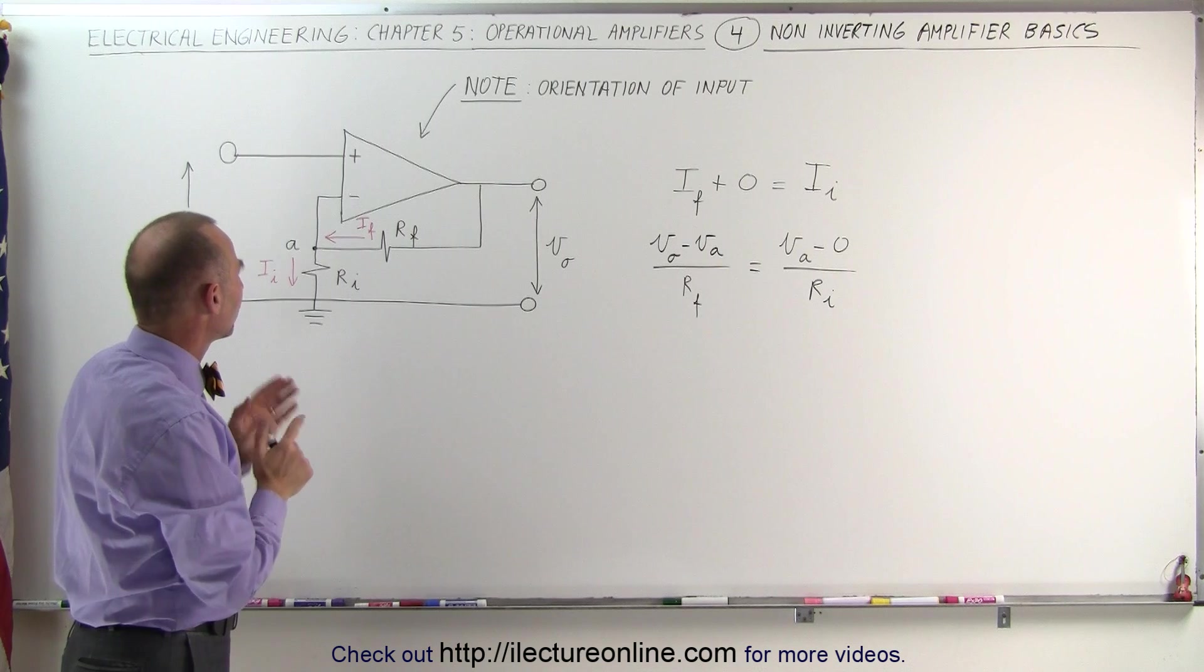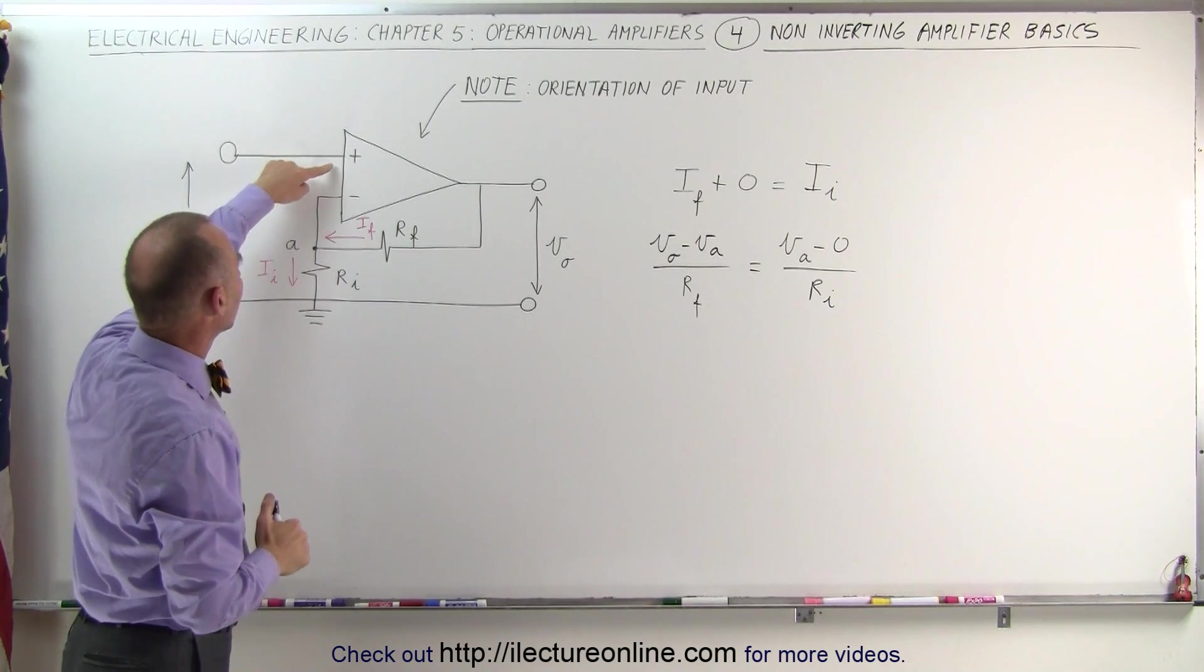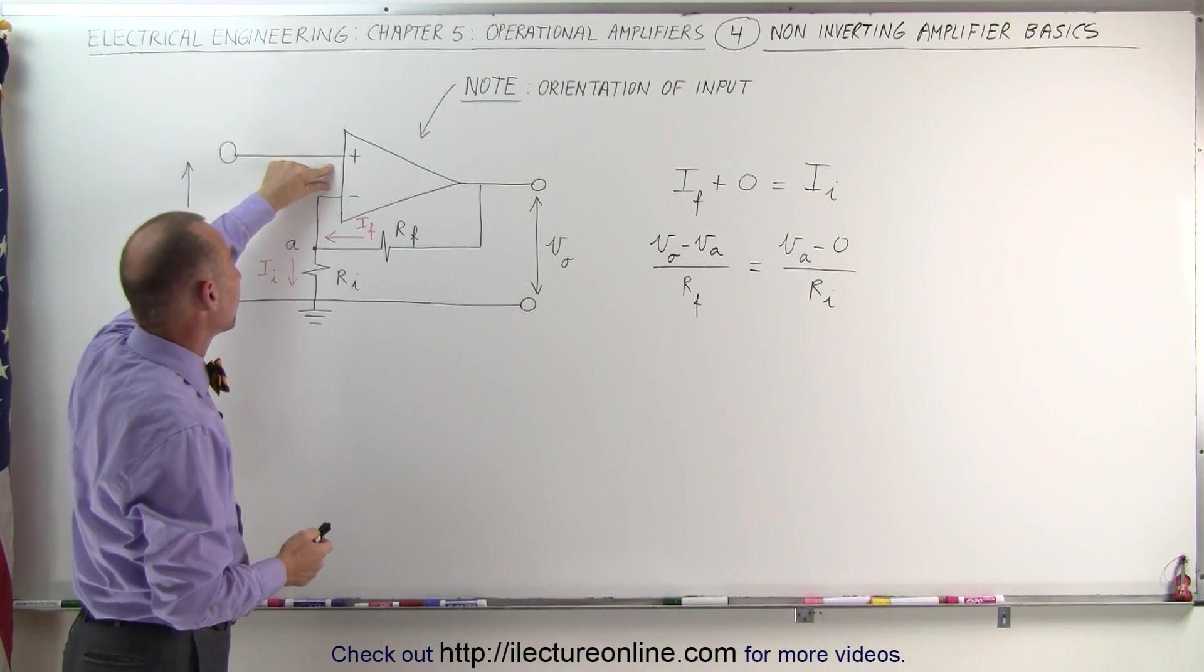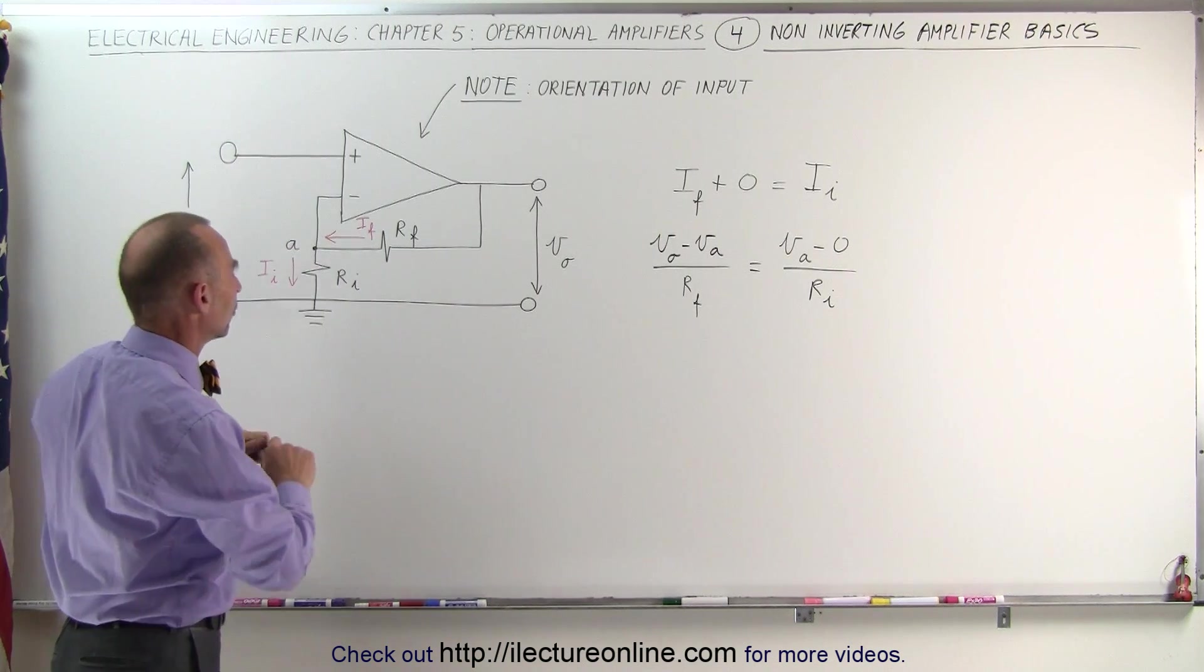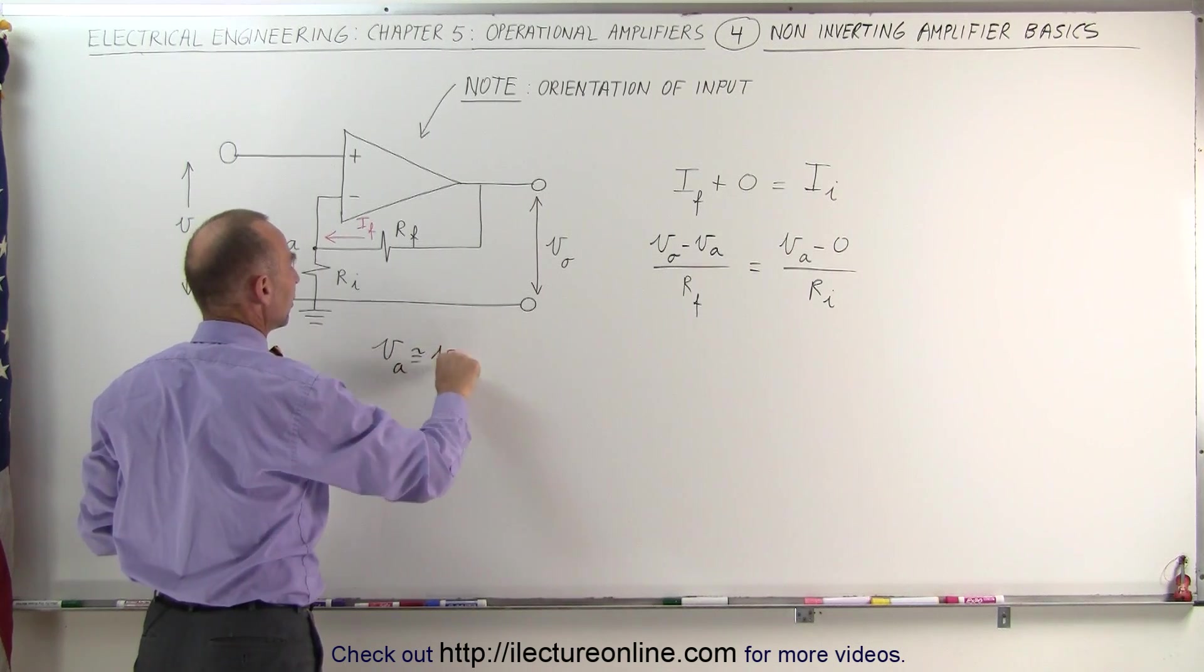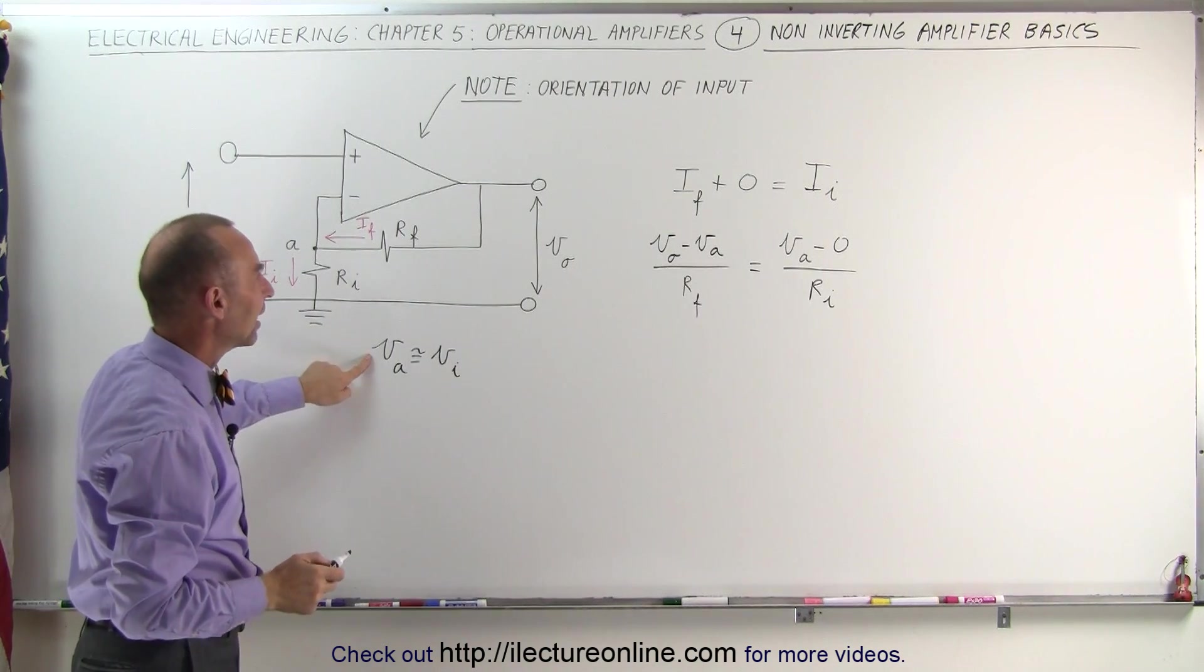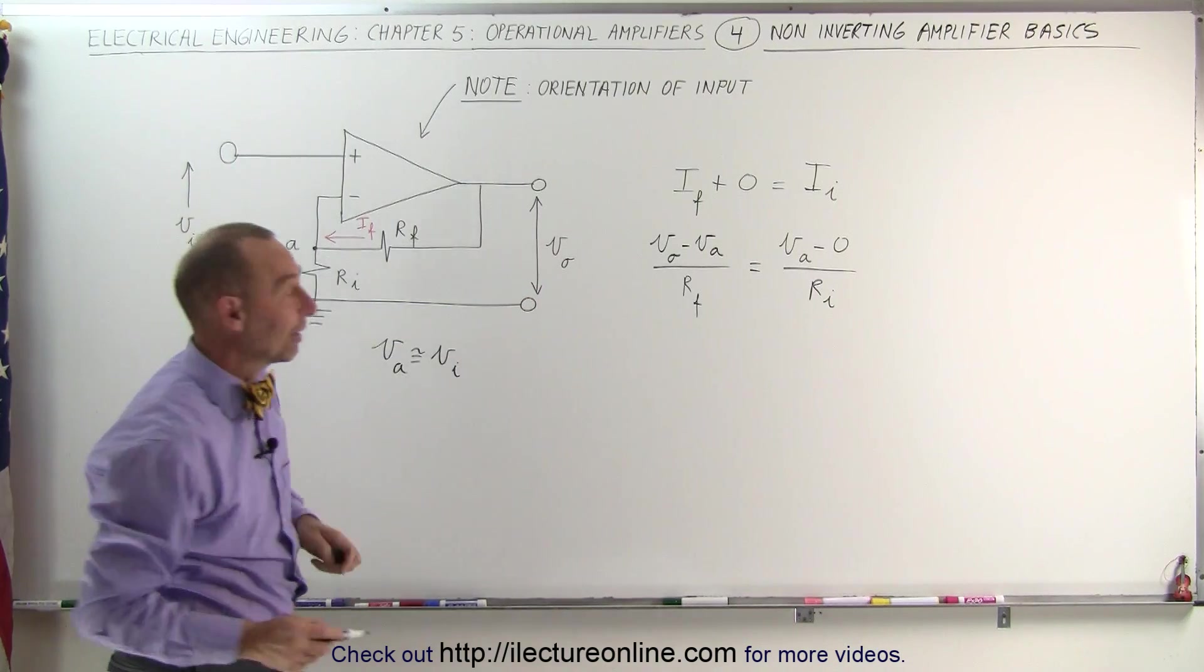Now, what we need to also do is realize that the voltage between the plus and the minus, or I should say the inverting and non-inverting terminals of the operational amplifier, the voltage here must be zero. Which means that V sub A must be the same as the input voltage. So we can say that V sub A is approximately equal to the input voltage because the potential difference between these two points right here must be nearly zero. If that's the case, I can then replace V sub A by V sub I on both sides of the equation.